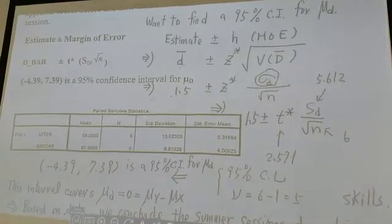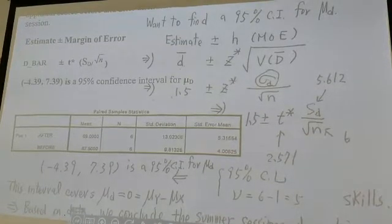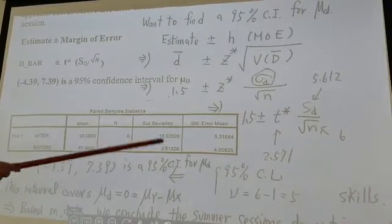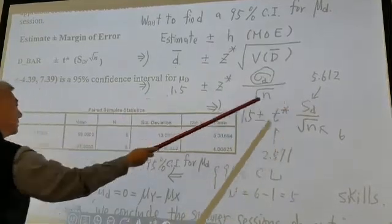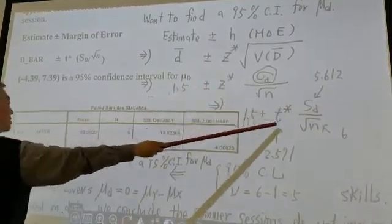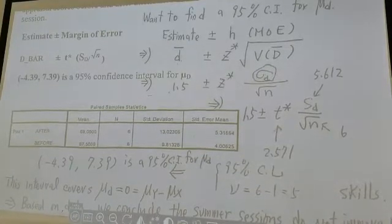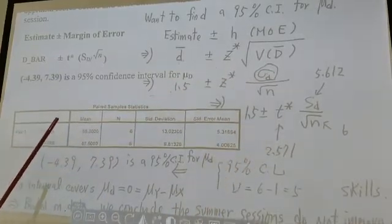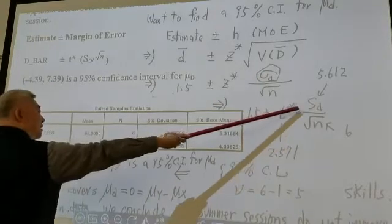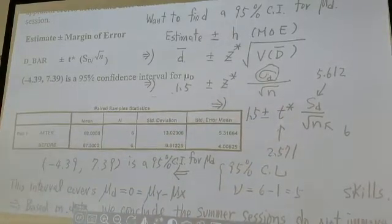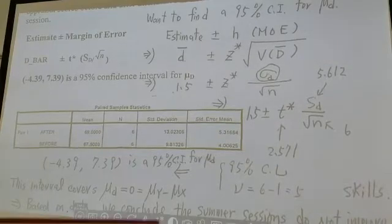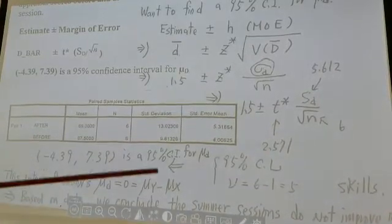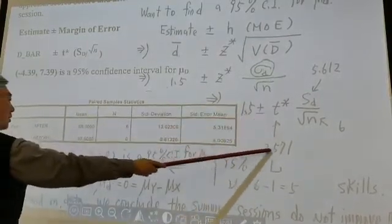When do we get a t-distribution instead of the standard normal distribution? When we don't know the population standard deviation and estimate it by the sample standard deviation. So we change from σd to sd, and from standard normal to Student's t. From the earlier calculation, we know d-bar is 1.5, sd is 5.612, and n (sample size) is 6. Using the t-table, we find t-star is 2.571.